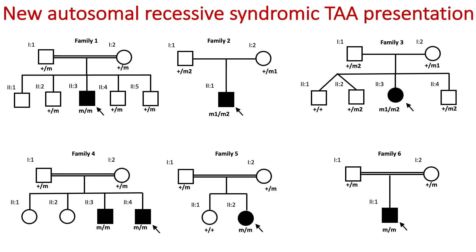Today I would like to share with you for the first time a new autosomal recessive syndromic thoracic aortic aneurysm presentation. Autosomal recessive does not imply a difference between males and females, and recessive refers to the fact that for an individual to be affected they need to carry a mutation in both copies of the gene — in most cases one inherited from the father, one from the mother — and only if you have two mutations do you present with the disease.